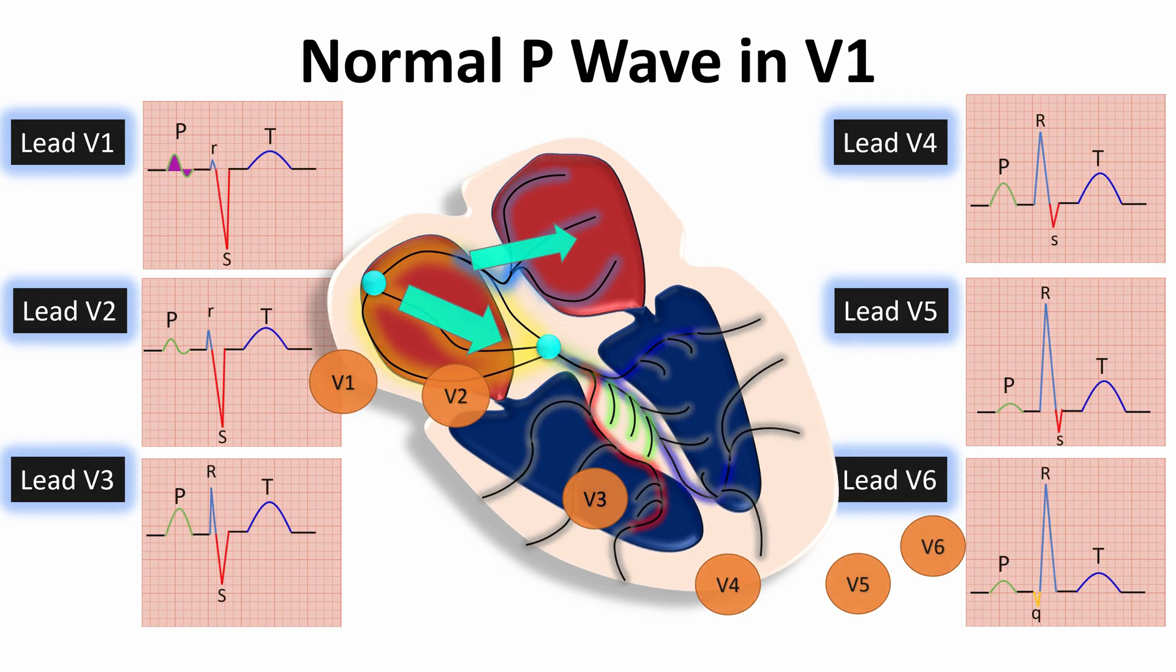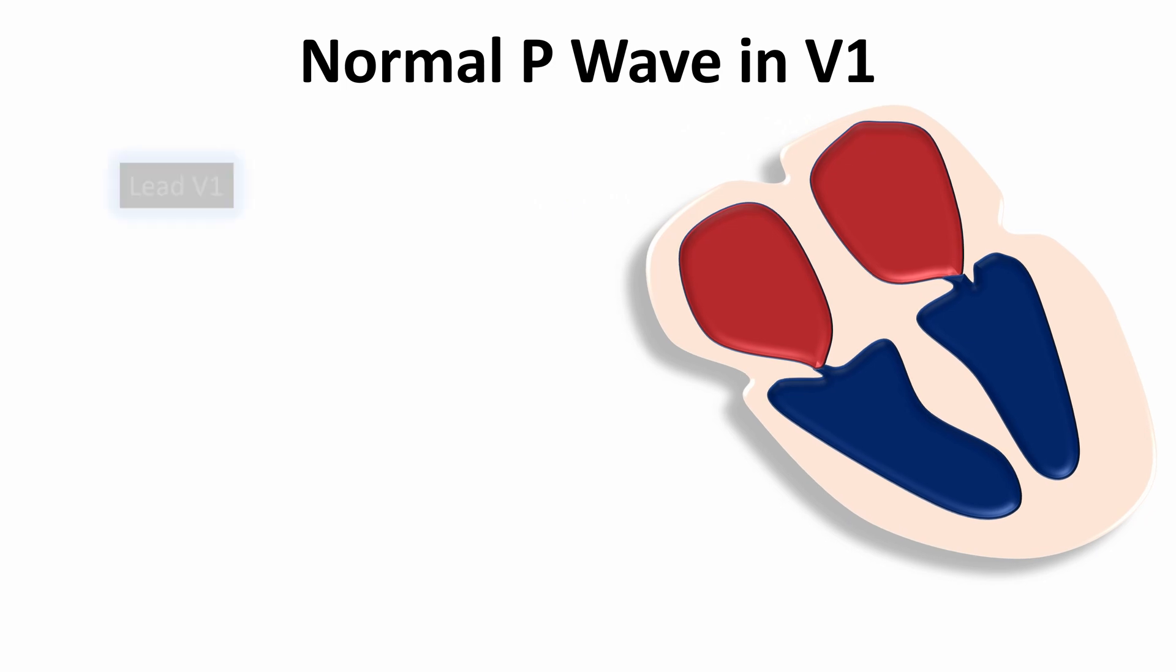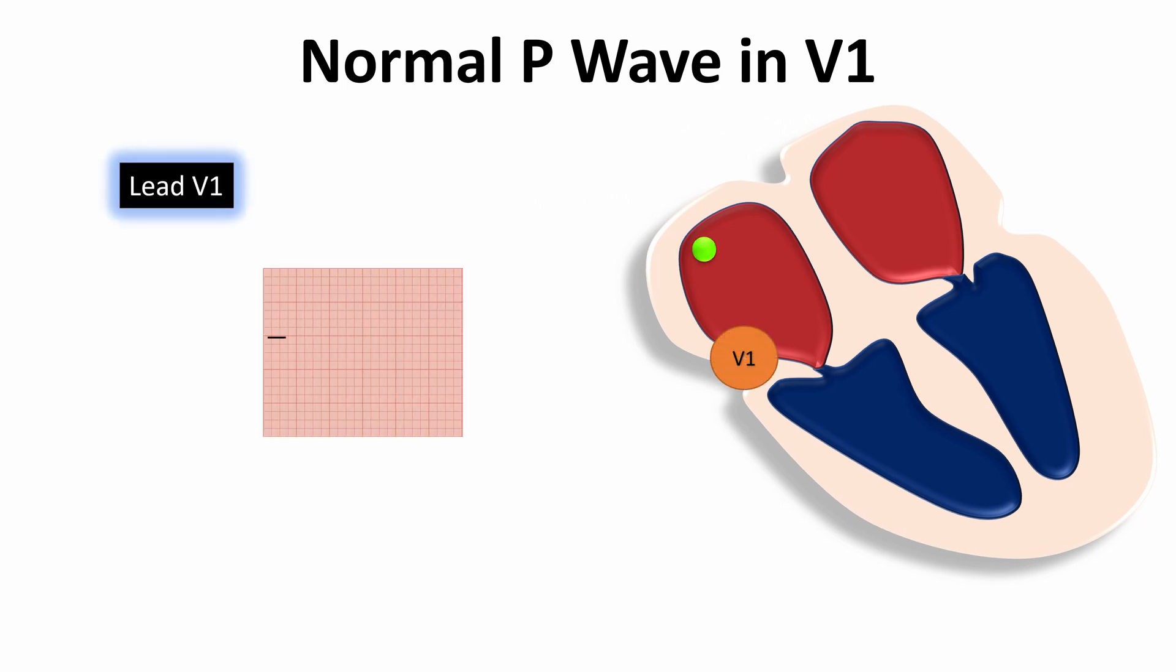So, to explain this clearly, we have the right atrial activation toward the chest lead V1, and this will draw a large positive wave at the beginning of the P wave. Then we have the left atrial activation, which goes slightly to the left, away from the lead V1. It draws a small negative wave after the positive wave.